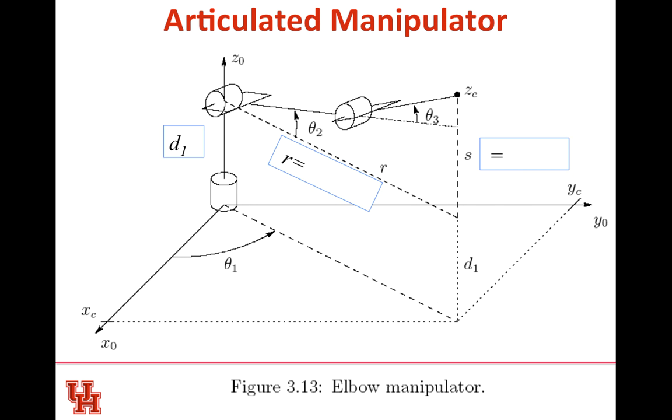Here's an example. This is our articulated manipulator that has a waist rotation, shoulder rotation, and elbow rotation. We'd like to figure out these unknown parameters. We're given ZC, the center of our wrist coordinate, and also XC and YC. We want to first solve what R is, and then solve what S is. I'm going to let you pause and see if you can figure that out. Go ahead and pause the video and solve this out.